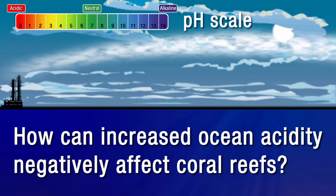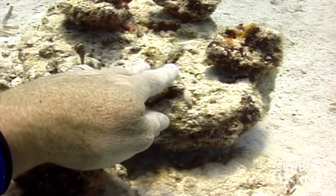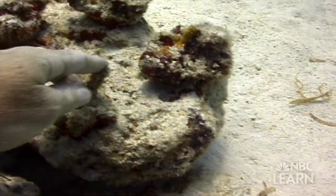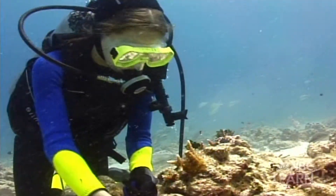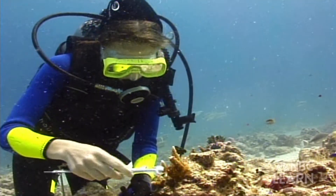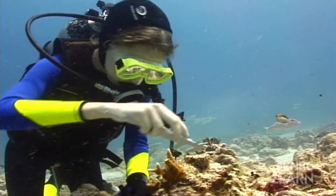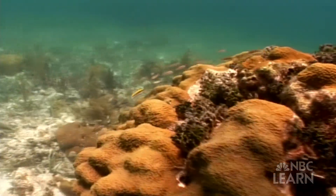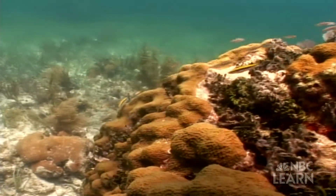How can increased ocean acidity negatively affect coral reefs? Acidification is interfering with the ability of corals to reproduce and replace what's being lost. Carbon is present in seawater, where the tiny invertebrate animals, or coral polyps, use calcium and carbonate ions to form calcium carbonate, which are the chemical ingredients that make up their hard protective shells. When these shells grow together, they form structure, or reef.